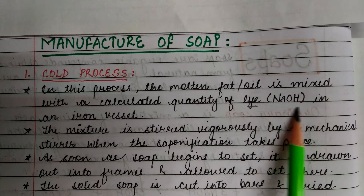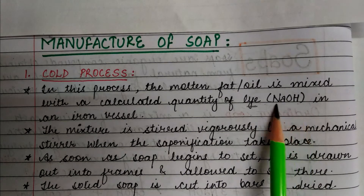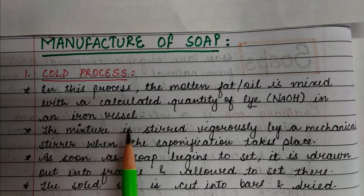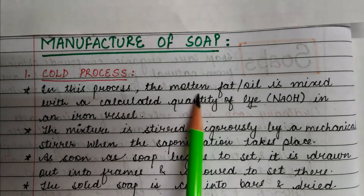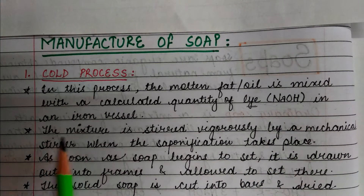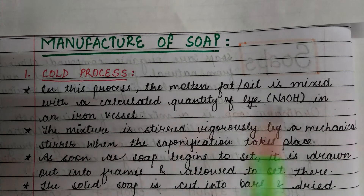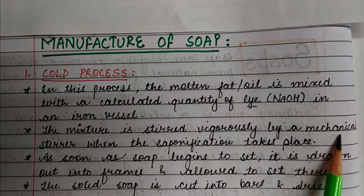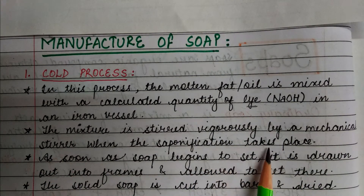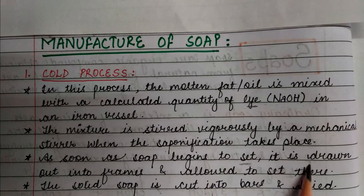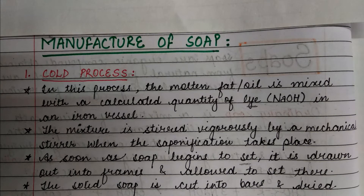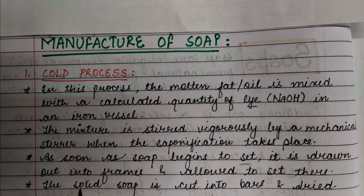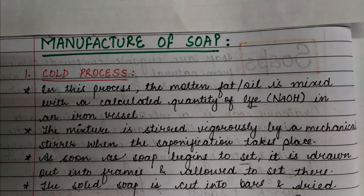We take a lye of NaOH in an iron vessel and mix molten fat or oil into it. The mixture is stirred vigorously using a mechanical stirrer, and saponification takes place. As soon as soap begins to set, it is drawn out into frames and allowed to set there. The solid soap is then cut into bars and dried.